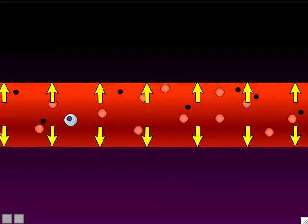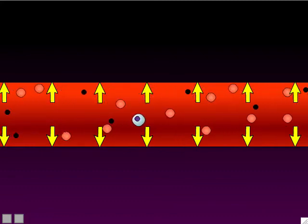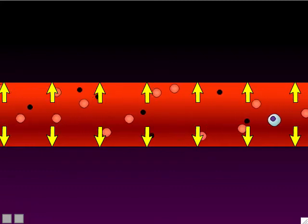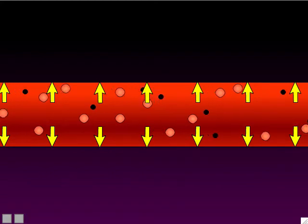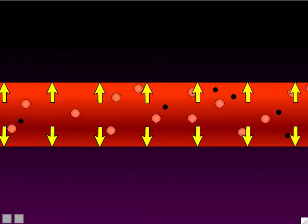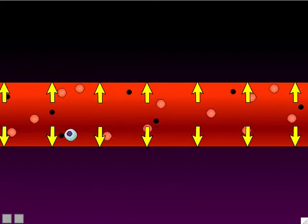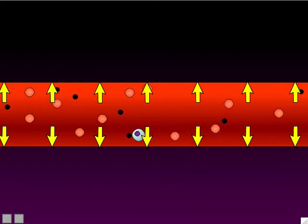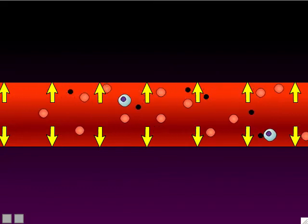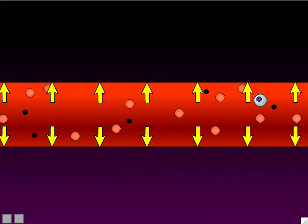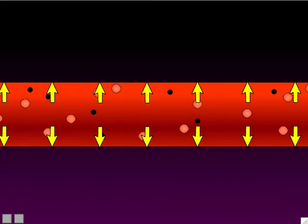Blood pressure is defined as the pressure — the outward pressure — in the arteries, not the capillaries and not the veins. Just by definition, it's the outward pressure in the walls of the arteries.